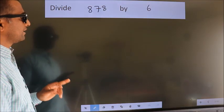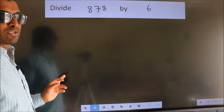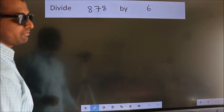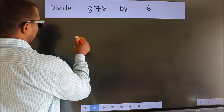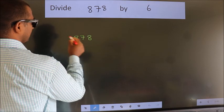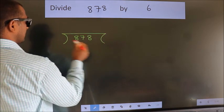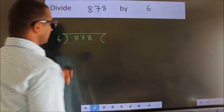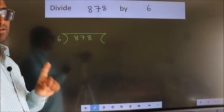Divide 878 by 6. To do this division, we should frame it in this way: 878 here, 6 here. This is step one.